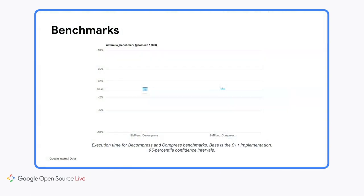Let's talk about the performance comparison between the C++ and Rust versions of the WOFF2 code. The WOFF2 C++ code already included some benchmarks, which I ported to Rust. They measure both compression and decompression speed, and I ran them over a folder containing dozens, if not hundreds, of TTF files. I ran both benchmarks using Google's internal benchmarking tool. The graph shows the average execution time and the 95th percentile confidence intervals, where C++ is the base.